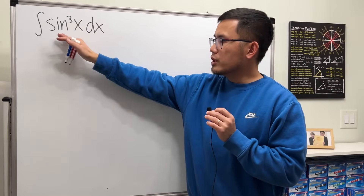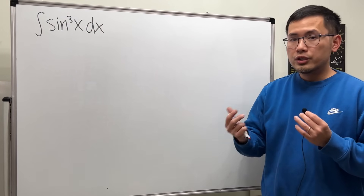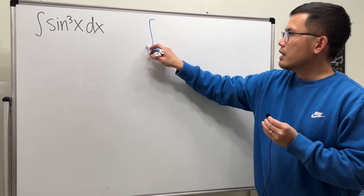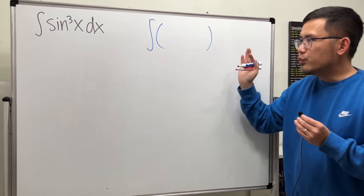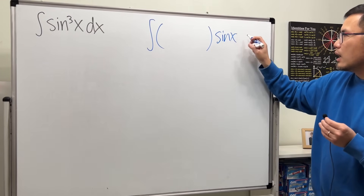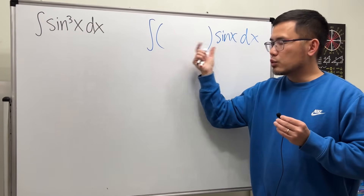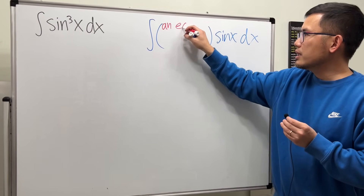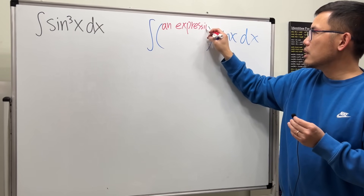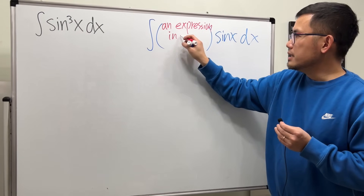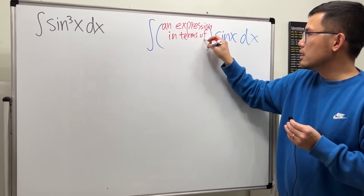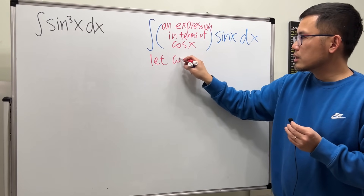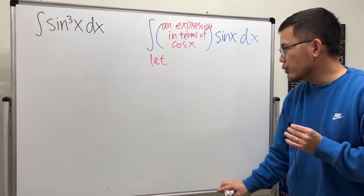When we are integrating trig functions there are strategies we can follow. When sine and cosine are involved, here's the deal: if we have an integral and we can see a sine x factor on the outside, we wish to have an easy enough expression in terms of cosine x. This way we can proceed by letting u equal to cosine x.